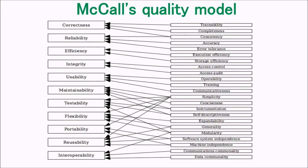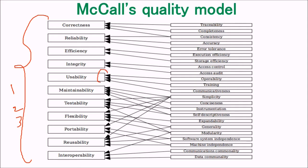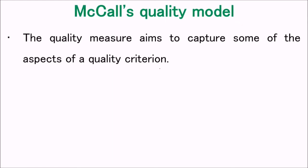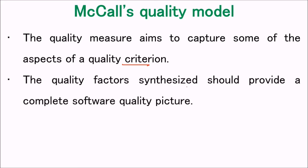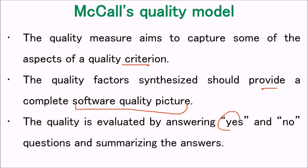In McCall's quality model, we have the three factors — product revision, transition, and operation — with certain criteria involved. For example, for usability, the criteria include operability, training, and communicativeness. The quality measure aims to capture aspects of quality criteria, and the quality factors synthesized should provide a complete software quality picture. Quality is evaluated by answering yes or no questions and summarizing the answers.